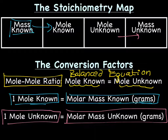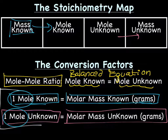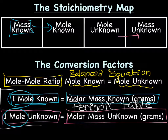I want to point something really important out. For these two equalities involving molar mass, the mole is always one mole—we do not get this number from the balanced equation. You always use one mole, and then calculate the molar mass from the periodic table. So we use the periodic table for these two equations, not the balanced equation.